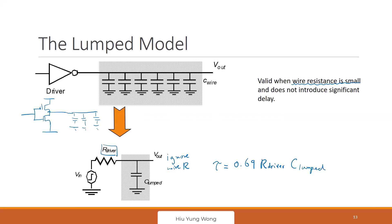R_drive is just this: for example, if you try to charge up — you go from one to zero, then the PMOS is off. Then you charge from zero to VDD divided by two. This is R_drive. How do you find R_drive?